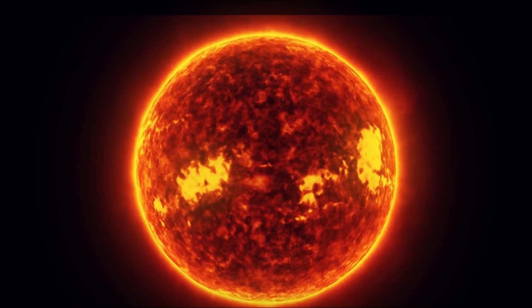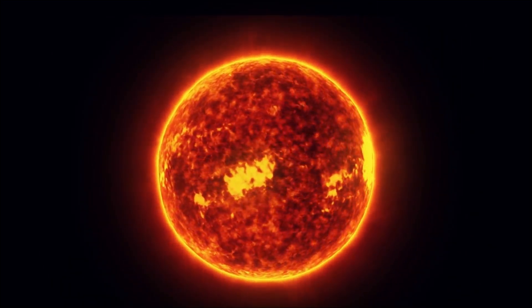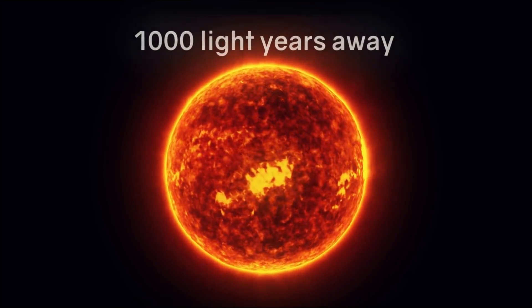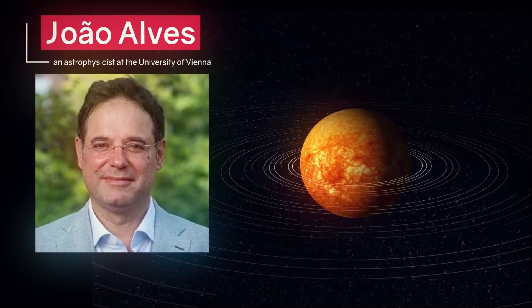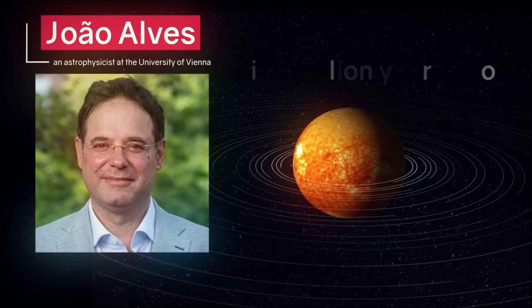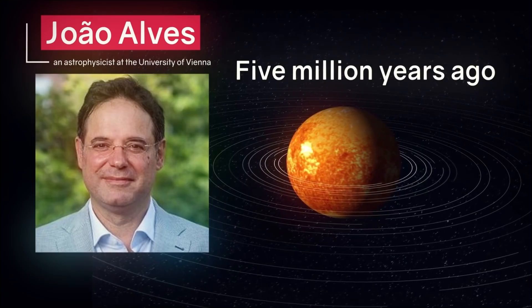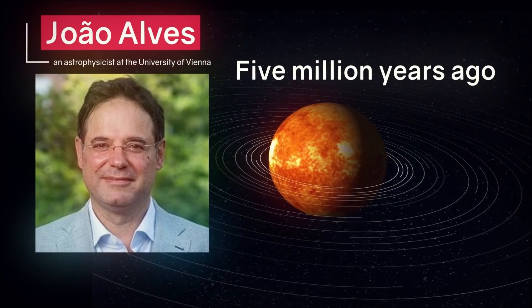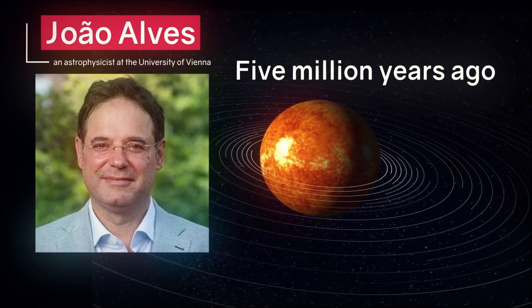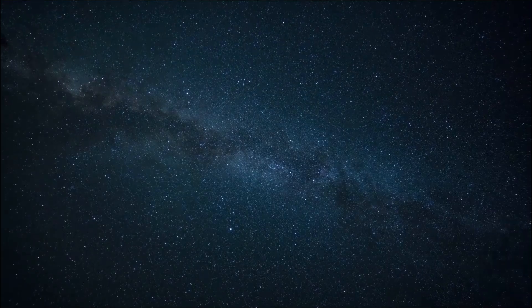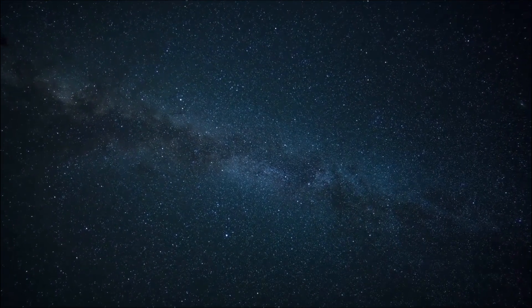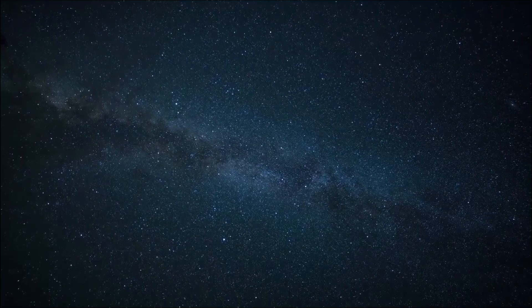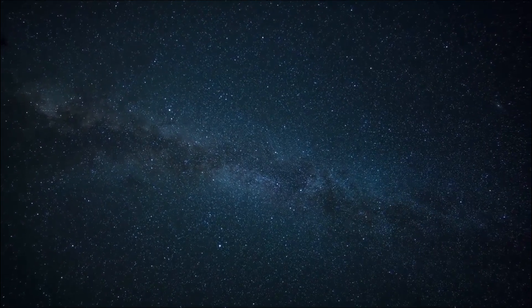Interestingly, the sun was not at the center of our universe at first. When these catastrophic explosions occurred, the sun was far away from the scene, about 1,000 light-years away. But, as Juan Alves, an astrophysicist at the University of Vienna, explained, about 5 million years ago, as it orbited the center of the galaxy, the sun got almost right at the center of the bubble. This is consistent with estimates of radioactive iron isotope deposits from a supernova in the Earth's crust, from other studies.